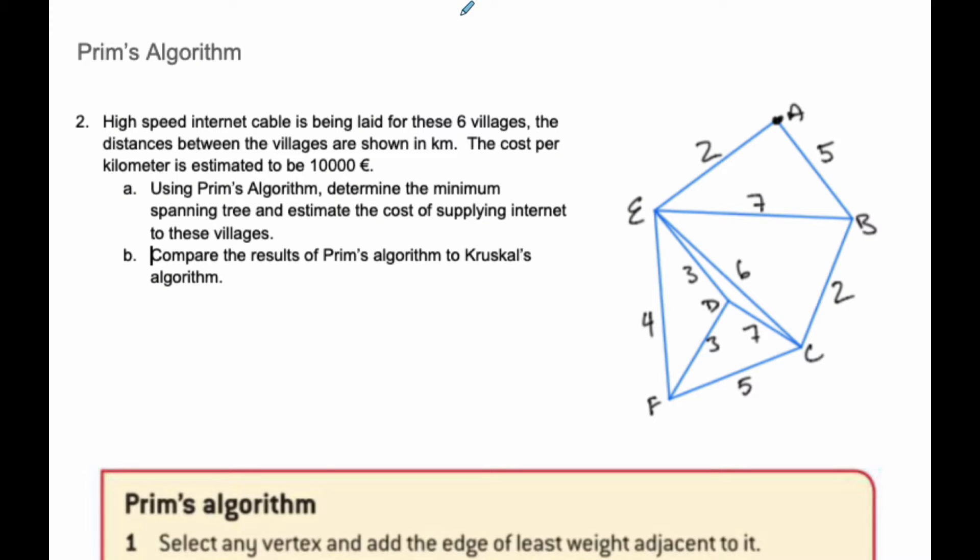In this example we're doing minimum spanning trees, and we're going to use Prim's algorithm this time. We have the same problem as before. We have internet cable being laid in six villages, and the cost is 10,000 euros per kilometer. We want to find a minimum spanning tree and estimate cost based upon Prim's algorithm.